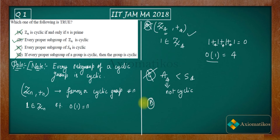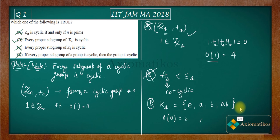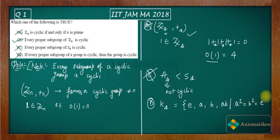Option D says if every proper subgroup of a group is cyclic, then the group is cyclic. To disprove this, consider the Klein-4 group K4. It consists of elements {E, A, B, AB} such that A² = B² = identity. This is actually an abelian group where AB = BA.